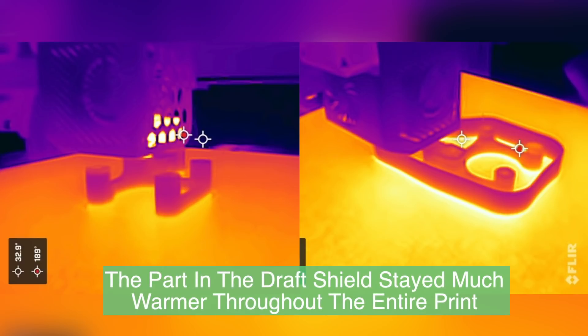With the two photos side by side, I could see the impact the draft shield had. Having the thermal camera set to the exact same range for all the prints, the parts in the draft shield stayed much warmer throughout the entire print, which was pretty impressive to me. Looking at the draft shield, you can see it's doing exactly what it's supposed to, as the outside of it is cooler, keeping some of the draft away from the part and the heated part is able to maintain some additional heat.